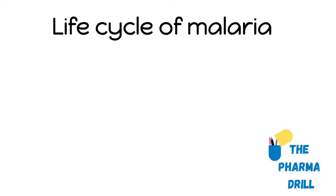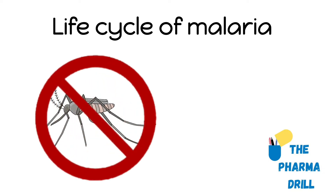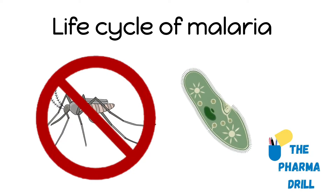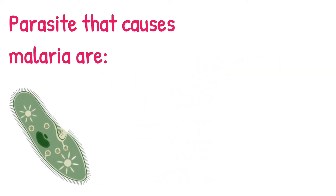When we think about malaria, the first thing that comes to our mind is mosquito. But you would be surprised to know that mosquitoes do not cause malaria, but just spread it. Malaria is caused by a protozoan called Plasmodium, and there are various species that cause malaria.